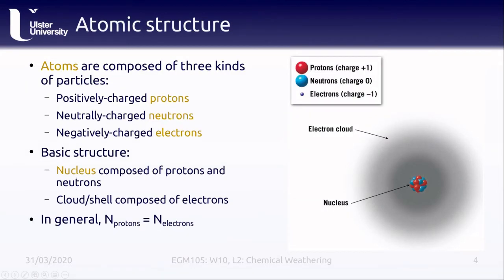Rocks are composed of minerals and minerals are composed of atoms — the building blocks that we can't chemically split into smaller components. Chemistry is the study of atoms and how they interact and react with each other. Atoms are composed of three different kinds of particles: protons, neutrons, and electrons. Protons have a positive charge, neutrons have no charge, and electrons have a negative charge.